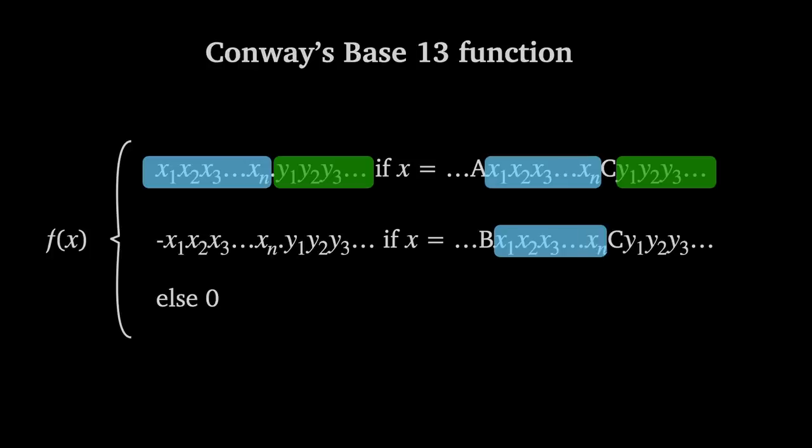With type B numbers, we do the same, but this time we take the negative value of the output. Any other number is mapped to 0.